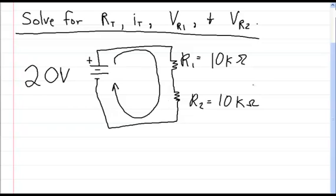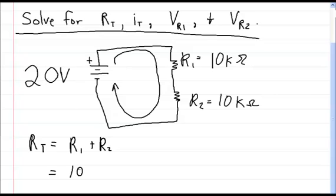To start off, we want to solve for the total resistance. How do we solve for RT? RT is equal to the sum of the resistors. When you have resistors that are in series, they sum together — R1 plus R2. This is equal to 10K plus 10K, or 10 kilo ohms, which is equal to 20 kilo ohms. That is equal to the total resistance.